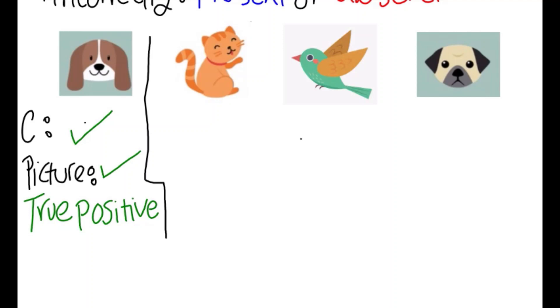For our second picture, we have a picture of a cat, and the child states that this is not a dog. This is a true negative, because the picture did not have a dog, and the child correctly stated that there was not a dog.